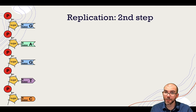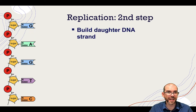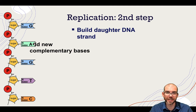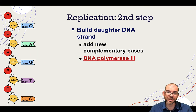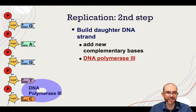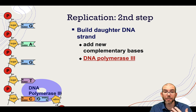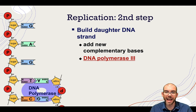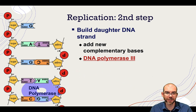The next step is to build the new strand. Here on the left-hand side, I have a DNA strand with 5' pointing up and 3' pointing down. To add new complementary bases, we use an enzyme called DNA polymerase III. DNA polymerase III comes in and adds new base pairs according to the base pairing rules — guanines attach to cytosine, adenines attach to thymine, cytosines attach to guanine, and so on. Notice that the 5' end of the new strand is pointing down, the opposite of the parent strand we're building on.